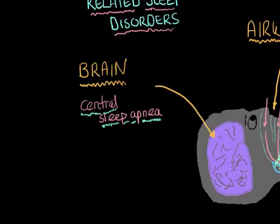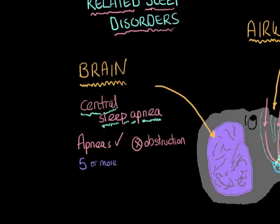And what we're looking for here is the presence of these apneas, but there is no obstruction. Again, on the polysomnography, we're only looking for five or more. These are the arbitrary criteria that are used. We're looking for five or more of these apneas per hour to be happening during sleep.